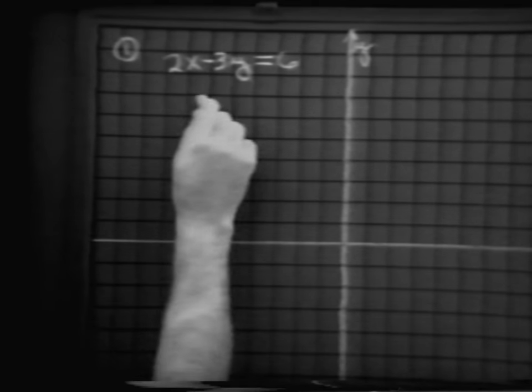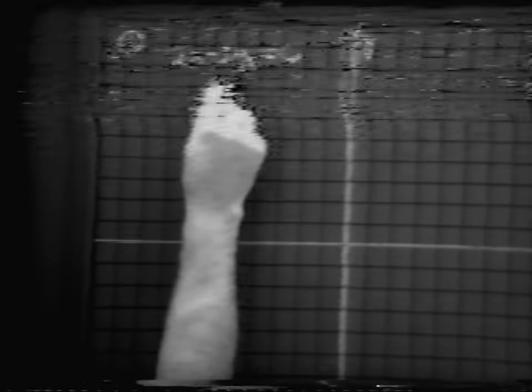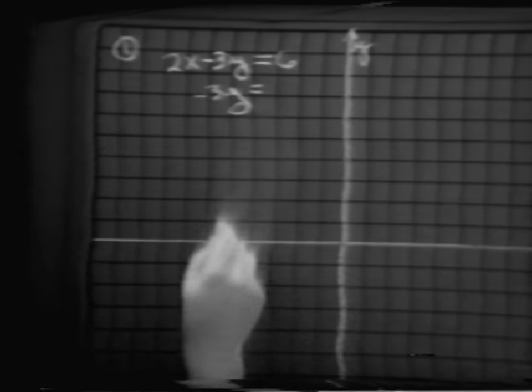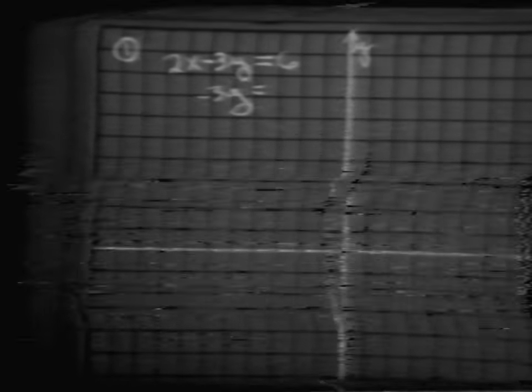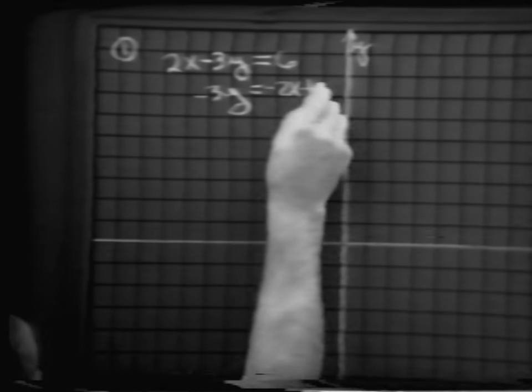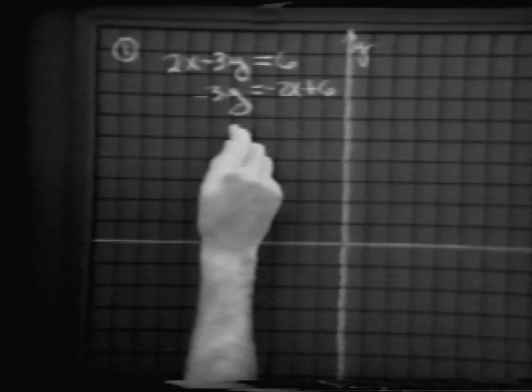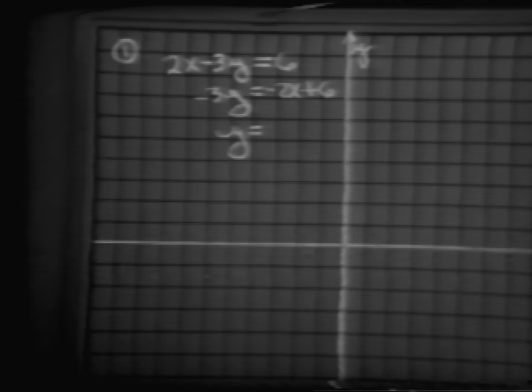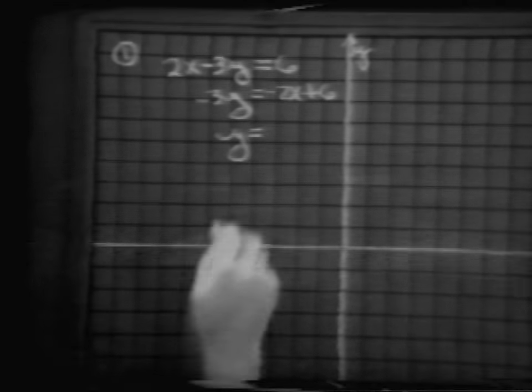Trying to get into our y pattern, one step we may make is to say the opposite of 3y is equal to the opposite of 2x plus 6, that is negative 2x plus 6. And then y is equal to 2 thirds x minus 2. Does everybody agree that it's minus 2 there?